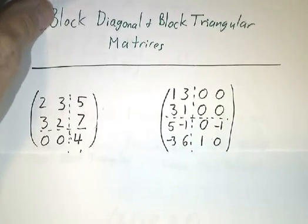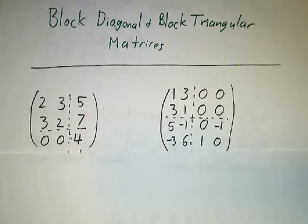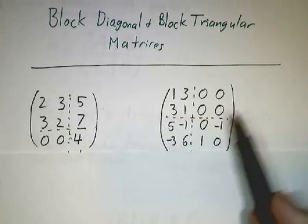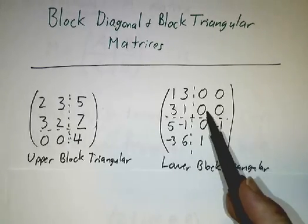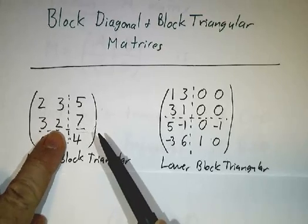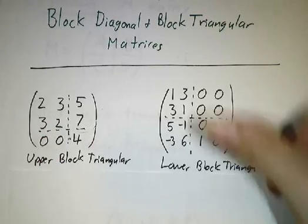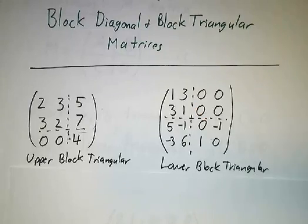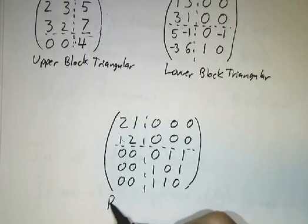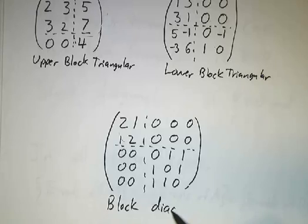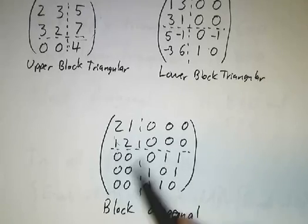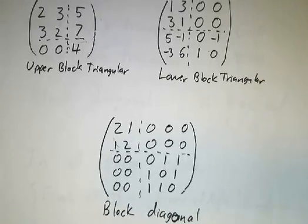A block triangular matrix is something of this form. We can divide it into blocks — this is what we call upper block triangular, and this is what we call lower block triangular. You divide it into square blocks where either only the upper part counts or only the lower part counts, and the rest is zero. This is what we call block diagonal: there's an upper left block, a lower right block, and everything else is zero.